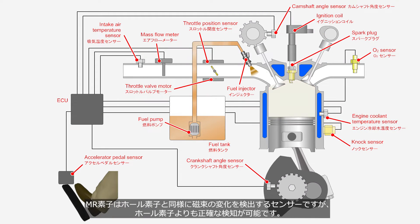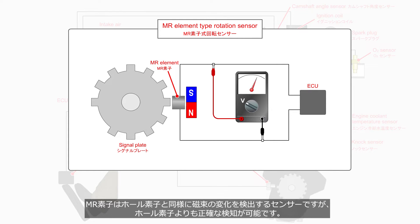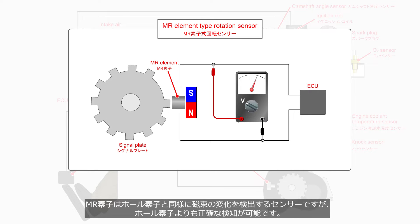The MR — magnetic resistance element — is a sensor that, like the hall effect sensor, detects changes in magnetic flux. However, it is capable of more accurate detection compared to the hall effect sensor.